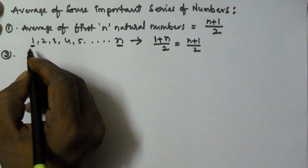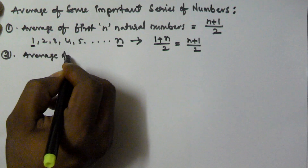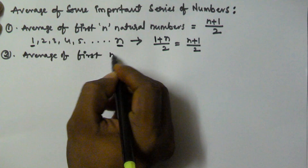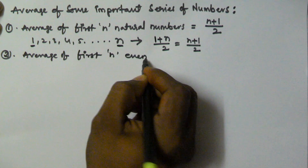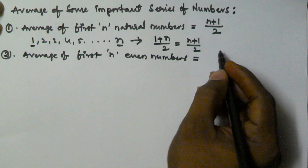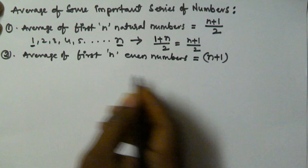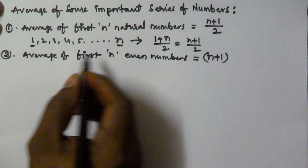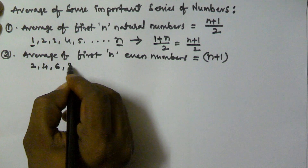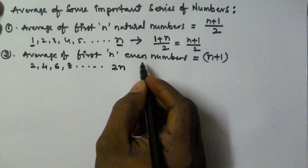The second formula: the average of first n even numbers is equal to n + 1. Let's write the first n even numbers: 2, 4, 6, 8, and so on. The last even number is 2n.